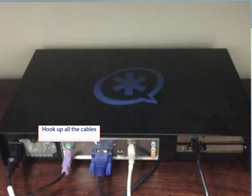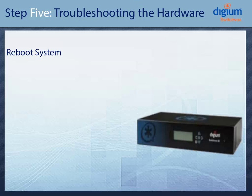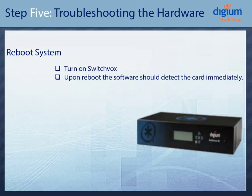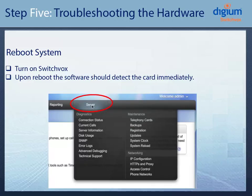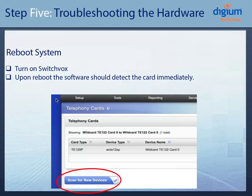Next, re-hook up all the cables and reboot your system. Turn on the switchbox PBX, and upon reboot, the software should detect the card immediately. If not, click on Server, then Telephony Cards, and click Scan for new devices.